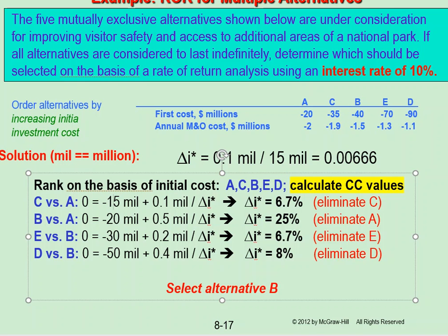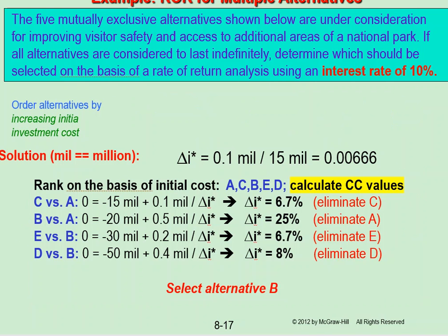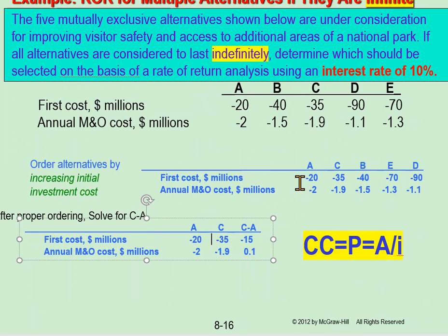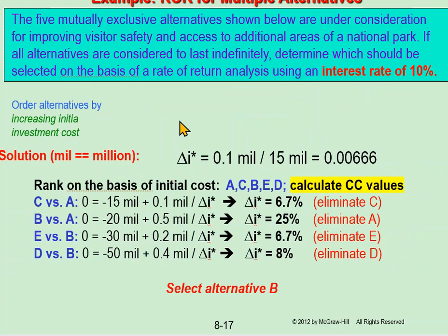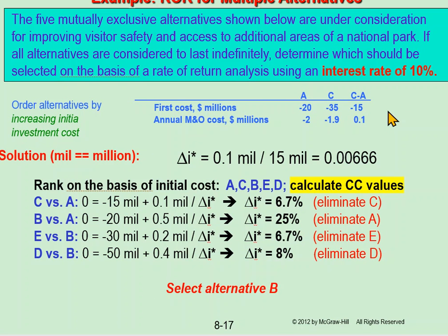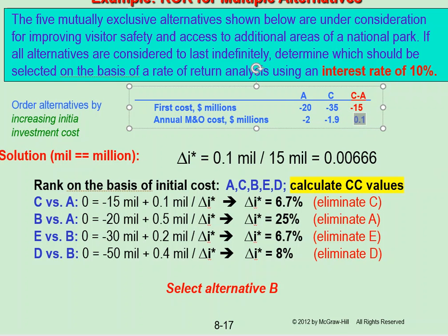We are using the C minus A comparison. I will apply the capital cost equation to find delta i. The P stays the same. Now let's get delta i, because we are solving for the incremental rate of return and will compare it to MARR. The interest rate given is 10%.